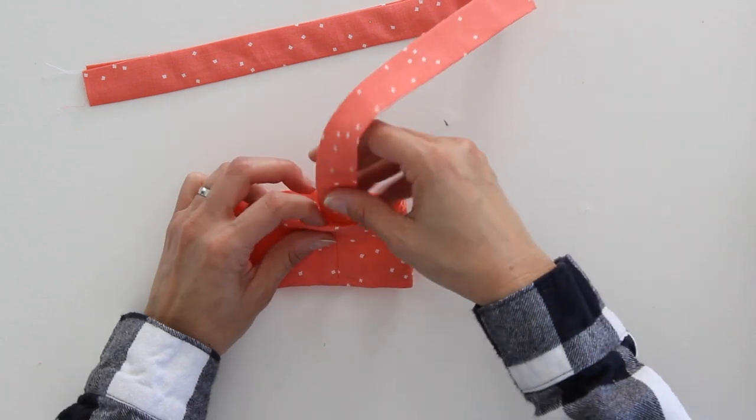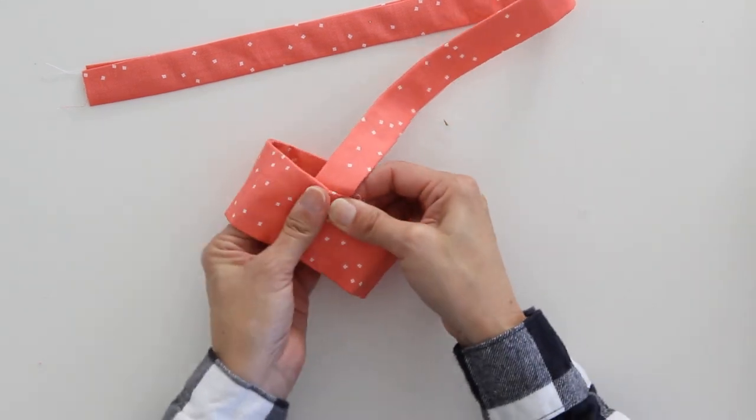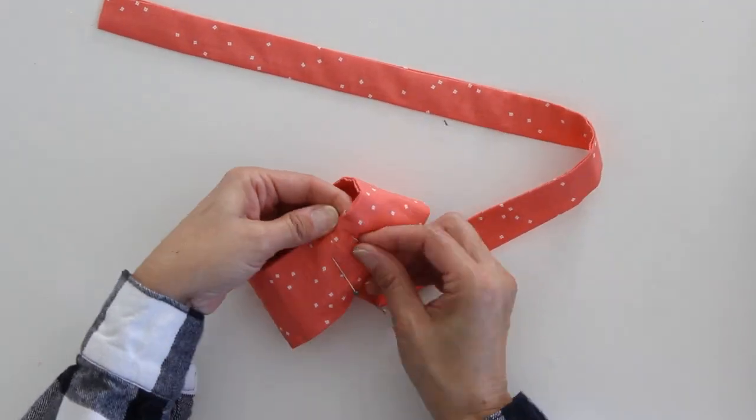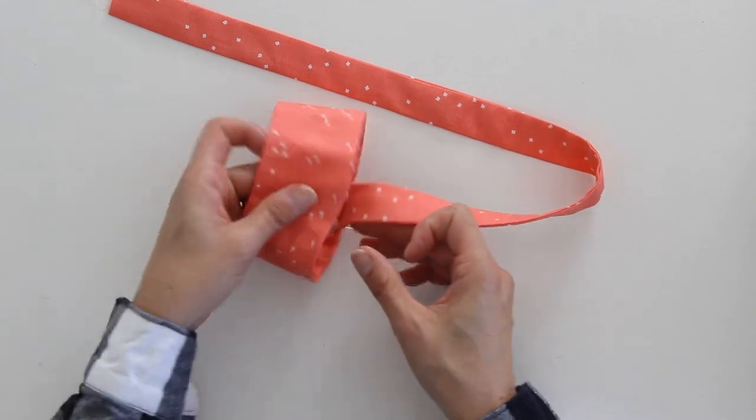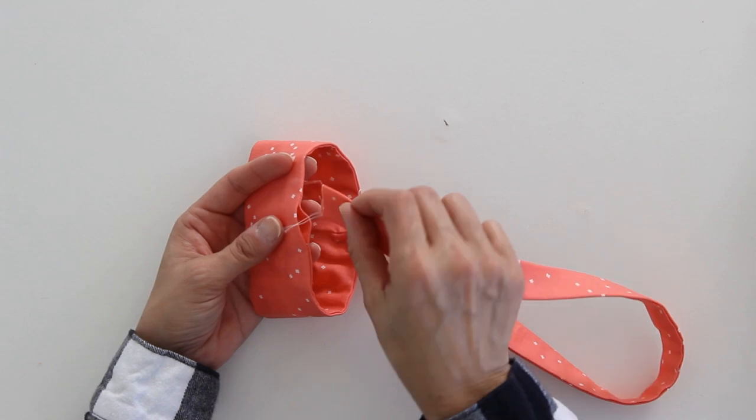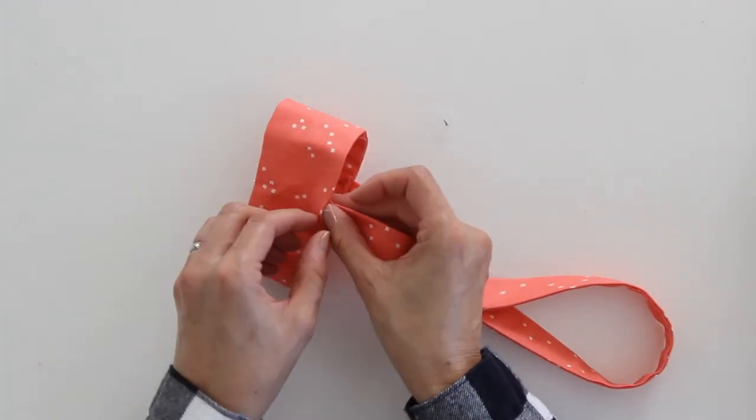So I want to stick my strap in here. We're going to center it and then exactly opposite I should have the other gap I left in stitching and I'll stick the other side of my strap in there.